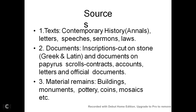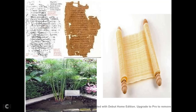Then material remains — including buildings, monuments, pottery, coins, mosaics, etc. These are the different types of sources from which we also gain knowledge of the Roman Empire.